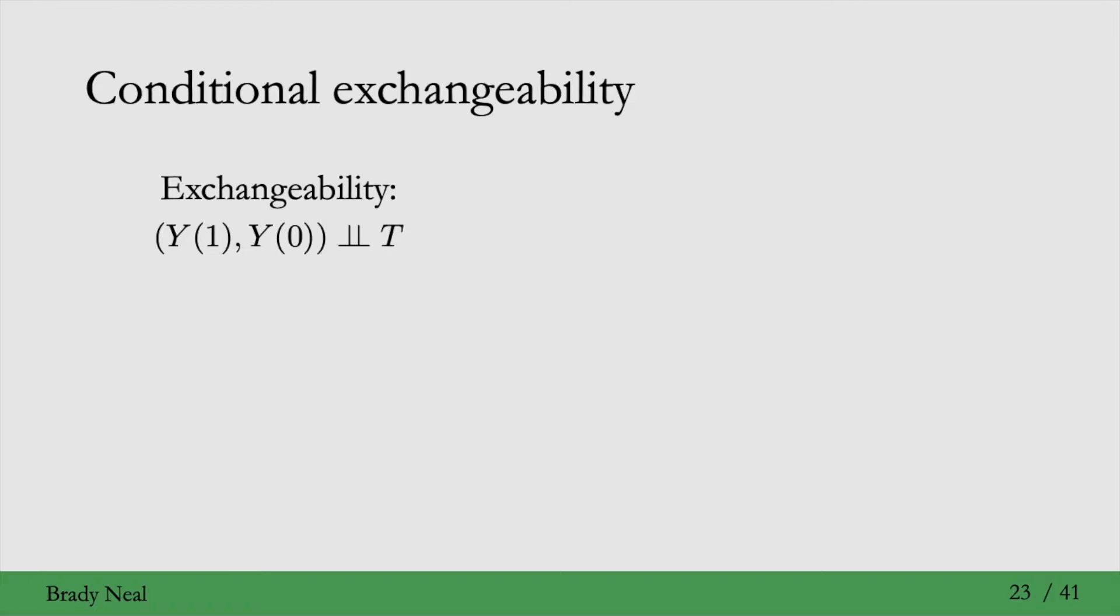We just saw the exchangeability assumption and how it allows us to identify the causal effect. However, exchangeability assumes a causal graph that looks like this, where basically we're saying that there is no confounding.